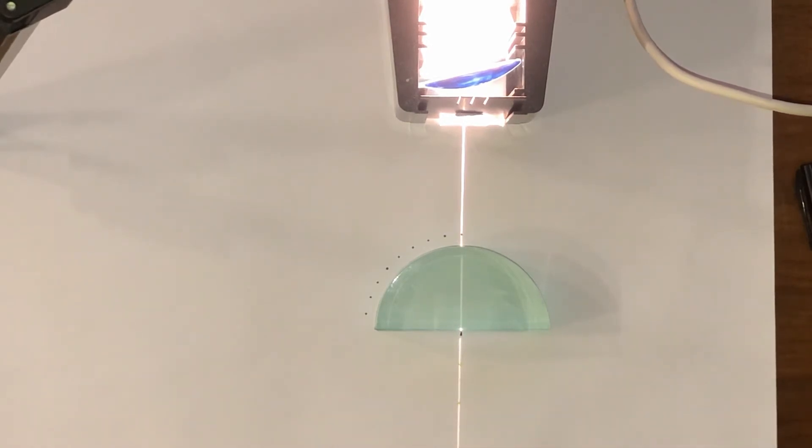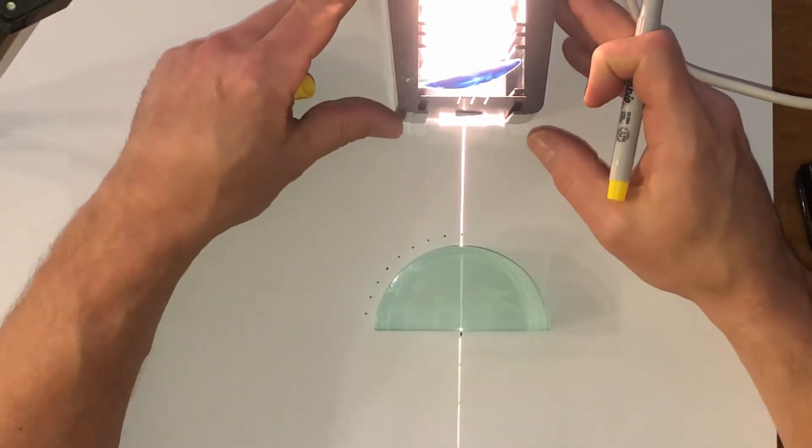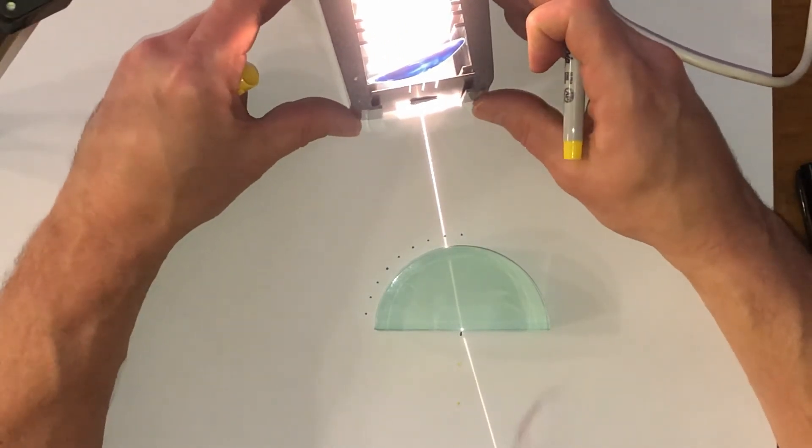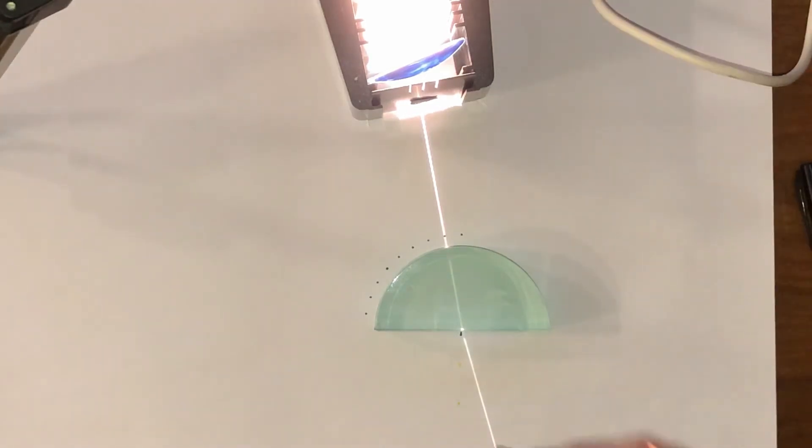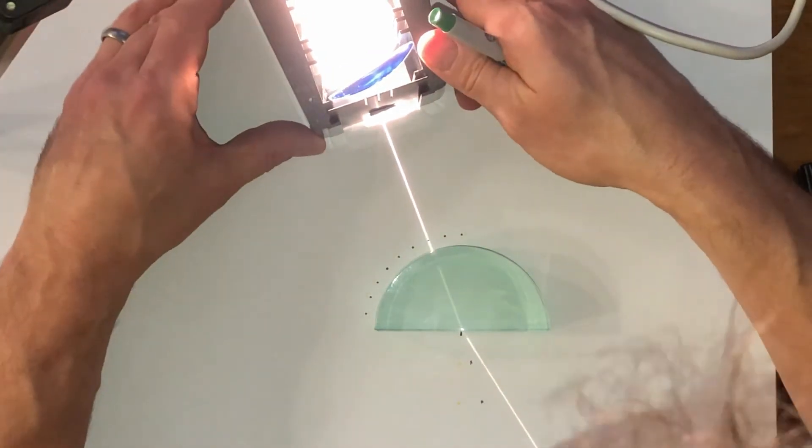I use crosses to show the route and then adjust the ray to aim at 10 degrees, again marking crosses to show where it's coming out of the block. I repeat that for all of the different angles.